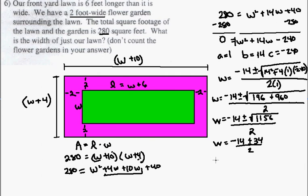So, think about this, this actually comes out, this plus and minus, comes out to be two answers. I have w equals negative 14, plus 34, over 2. I also have w equals negative 14, minus 34, over 2.